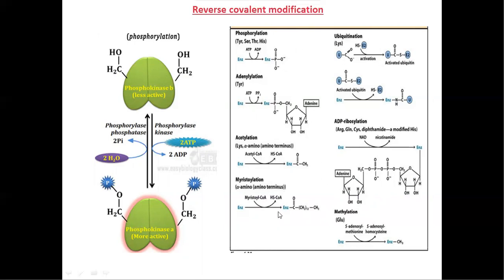There are many types of covalent modifications. In phosphorylation, phosphate molecules are attached to amino acid residues such as tyrosine, serine, threonine, and histidine present in the enzyme. In adenylation, an AMP molecule is attached to the enzyme at the tyrosine residue. In acetylation, an acetyl group is attached at a lysine amino acid residue. These are the other important covalent modifications.